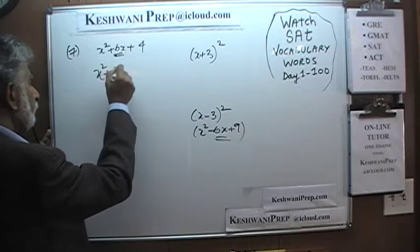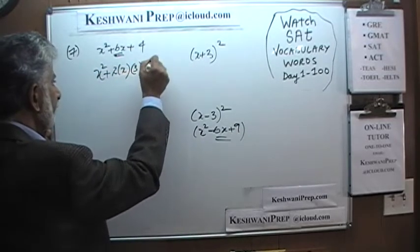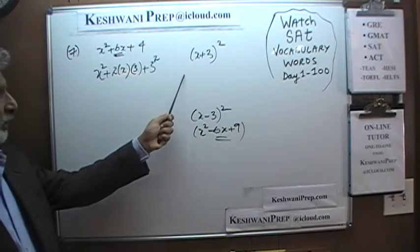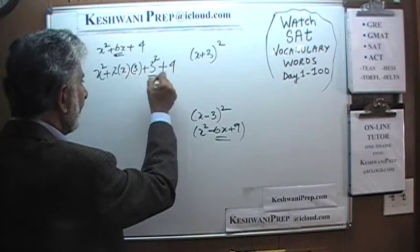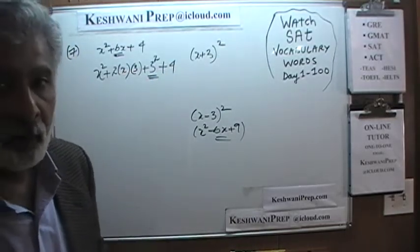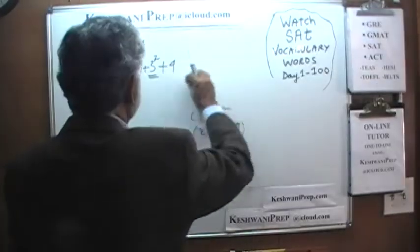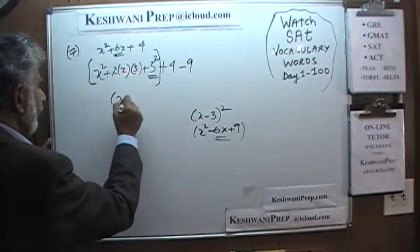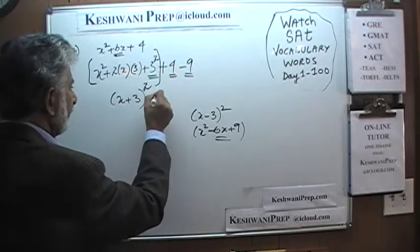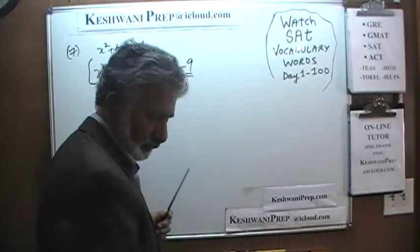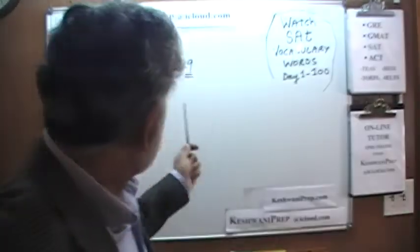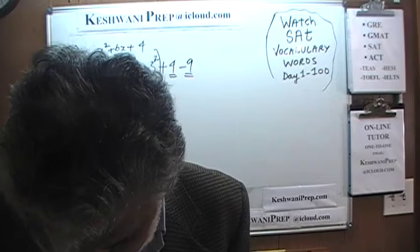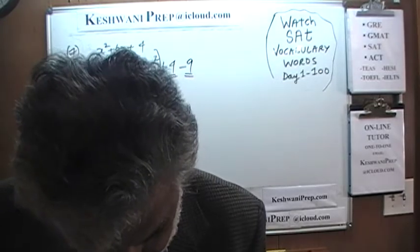Completing the square: we get x squared plus 2 times x times 3 plus 3 squared. That 3 squared — which is 9 — is not in the original expression, so if we add it, we eventually have to subtract it. We take care of the 4 and negate what we have done: we added 9, so we must subtract 9. So we have (x+3)² plus 4 minus 9, which gives (x+3)² minus 5. Pay attention — it is negative 5, and that is answer choice B.